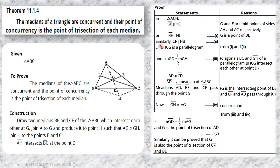Similarly, we can show that GC is parallel to BH. Since GE is parallel to HC (part 1) and GC is parallel to BH (part 2), both pairs of opposite sides are parallel. Therefore, BHCG is a parallelogram.